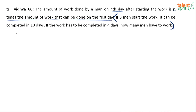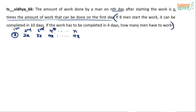Let's assume the amount of work done on the first day is x. How much will be done on the second day? 2x. Third day? 3x. Fourth day? 4x. On the nth day: nx. So on the first day you have done x, on the nth day you will do nx — on the 14th day you will do 14x, on the 10th day you will do 10x. That's what the question says.